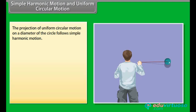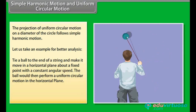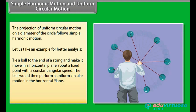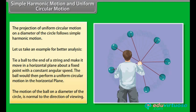The projection of uniform circular motion on a diameter of the circle follows simple harmonic motion. For example, tie a ball to the end of a string and make it move in a horizontal plane about a fixed point with constant angular speed. The ball performs uniform circular motion. Observing it from the front, the ball appears to execute to-and-fro motion along a horizontal line with the point of rotation as the midpoint — equivalent to observing the ball's motion on a diameter of the circle.